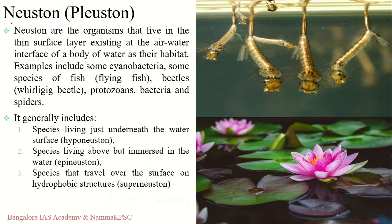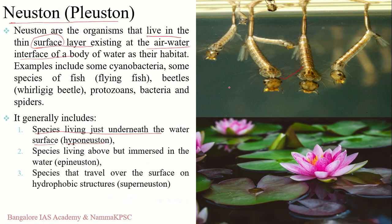The first type is neuston — organisms found along the surface of water, where water and air meet, in lakes, oceans, or slow-moving portions of streams. Hyponeuston includes species living just underneath the water surface, for example mosquito larvae floating just under the water's surface.